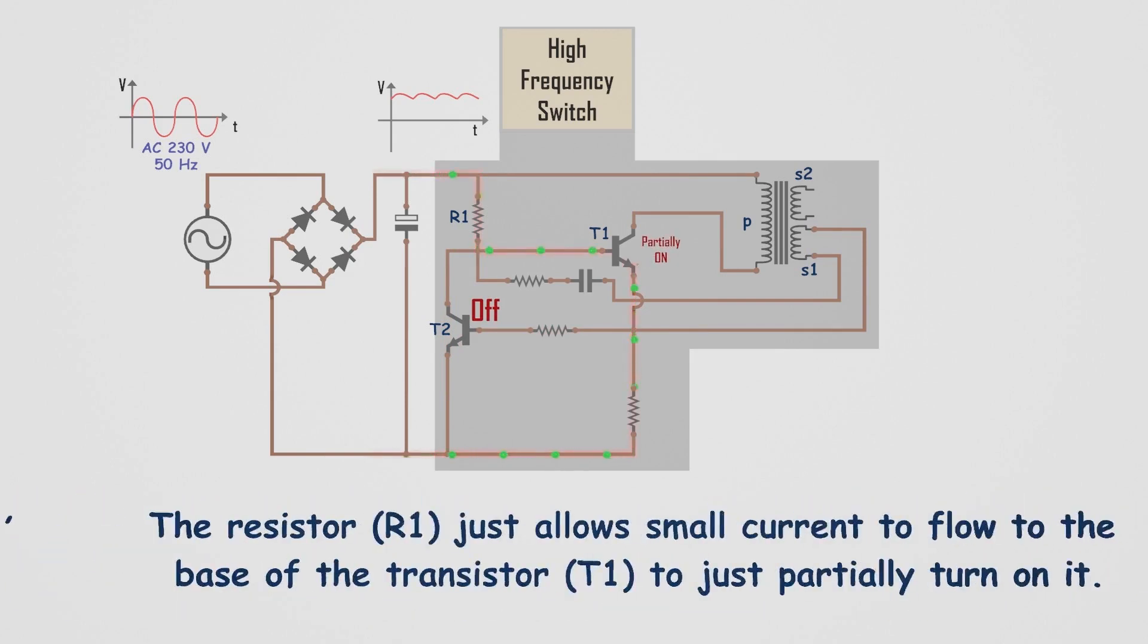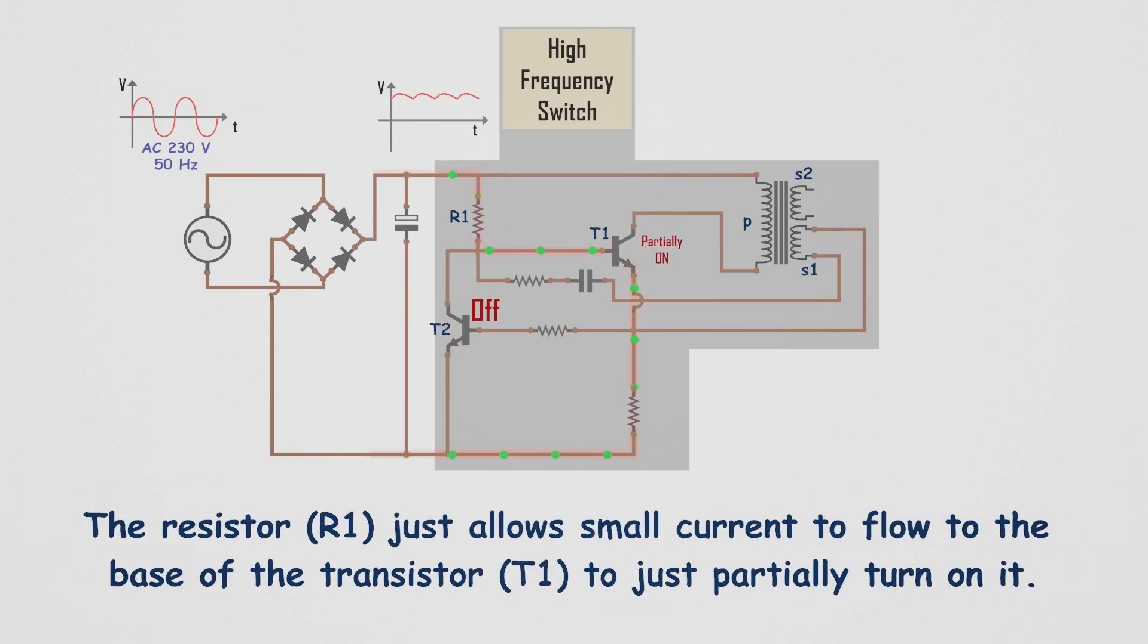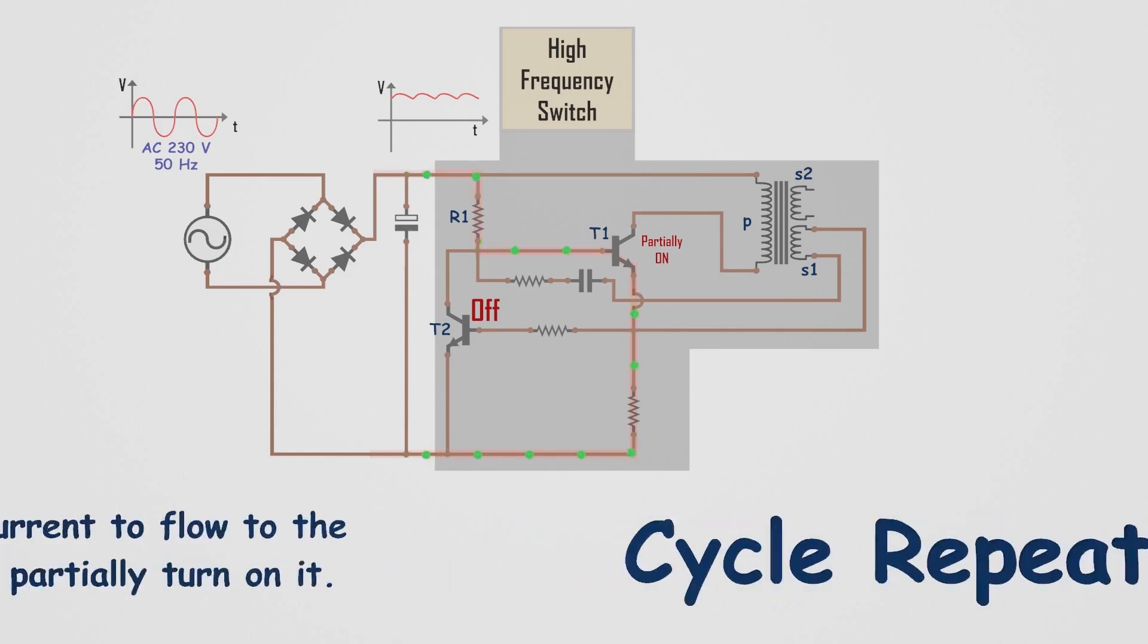Now again, the resistor at the base of T1 partially turns it on, allowing only a small current to flow from collector to emitter. Then, the cycle repeats.